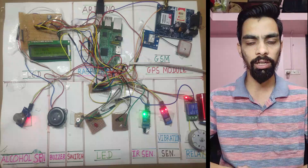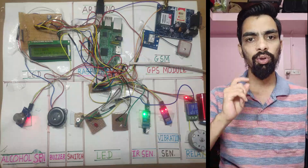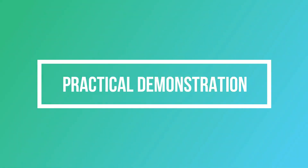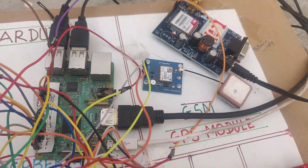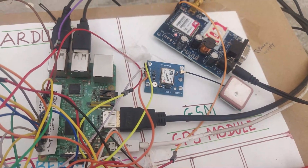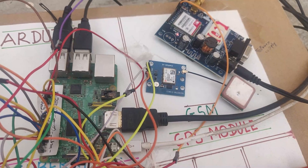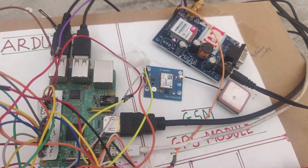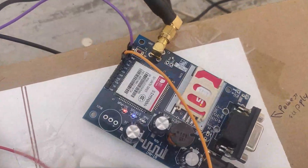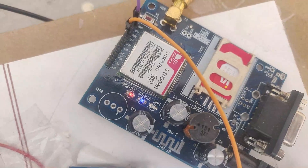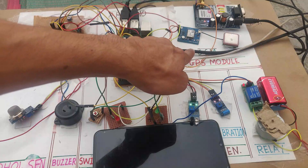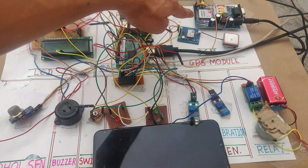We will also see how to run the project, so I request you please watch this complete video. On screen you can see I have connected the GPS and GSM modules to my Raspberry Pi. The GPS is getting a signal range and starting to fetch the location. The GSM is also getting range — you can see the GSM LED turning on and off. Both GPS and GSM modules are receiving signal.